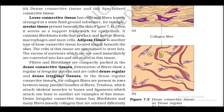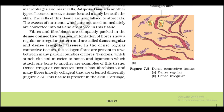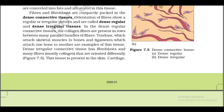Adipose tissue is another type of loose connective tissue located mainly beneath the skin. The cells of this tissue are specialized to store fats. The excess of nutrients which are not used immediately are converted into fats and stored in these tissues. In dense connective tissues, fibers and fibroblasts are completely packed. The orientation of fibers shows regular or irregular patterns, and they are called dense regular and dense irregular tissues.